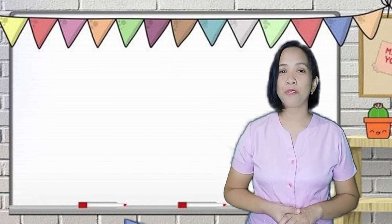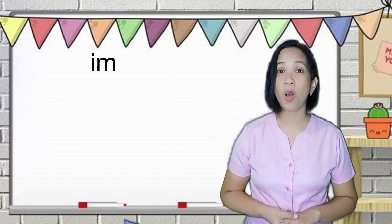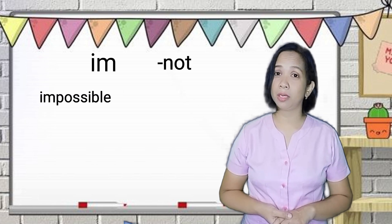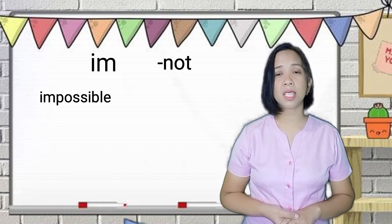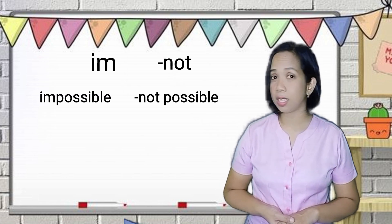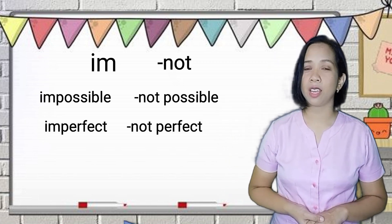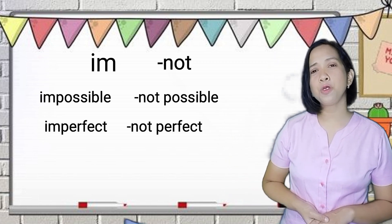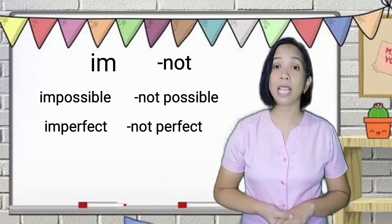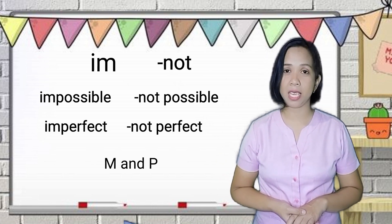Another prefix is im, which also means not. For example, impossible, which means not possible; imperfect, which means not perfect. We often use the prefix im if the first letter of the root word begins with the letter M or the letter P.